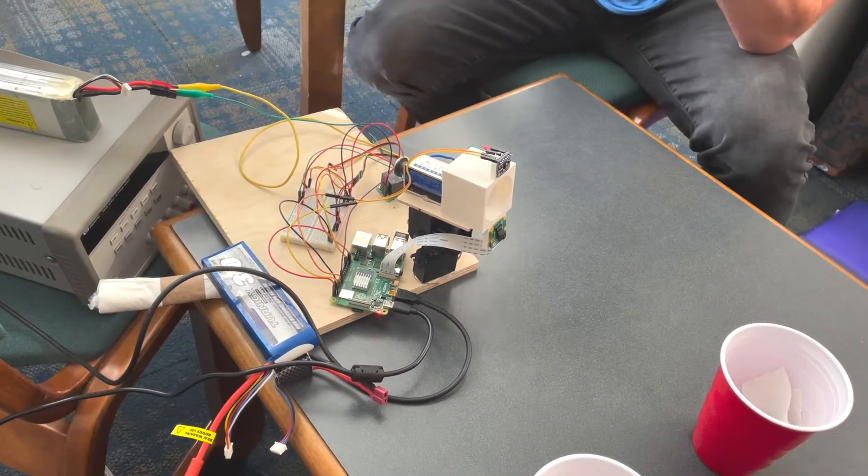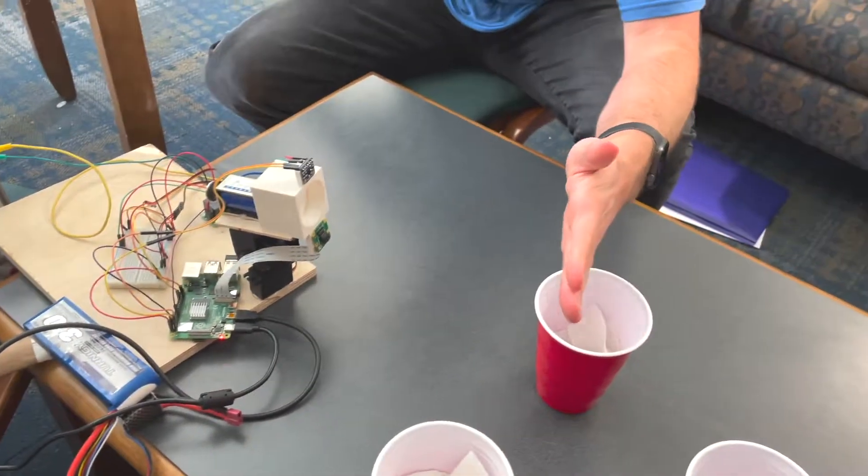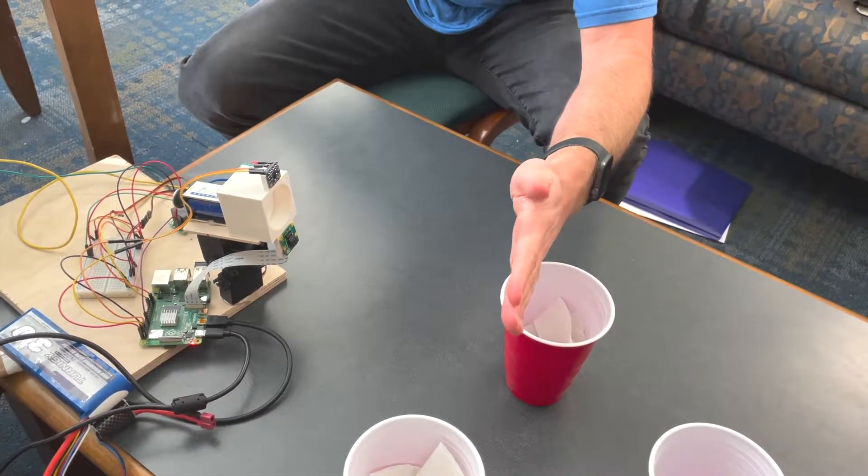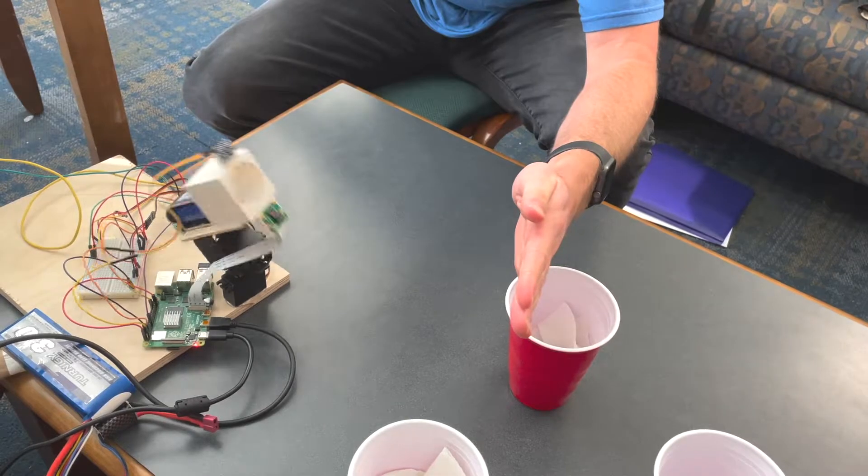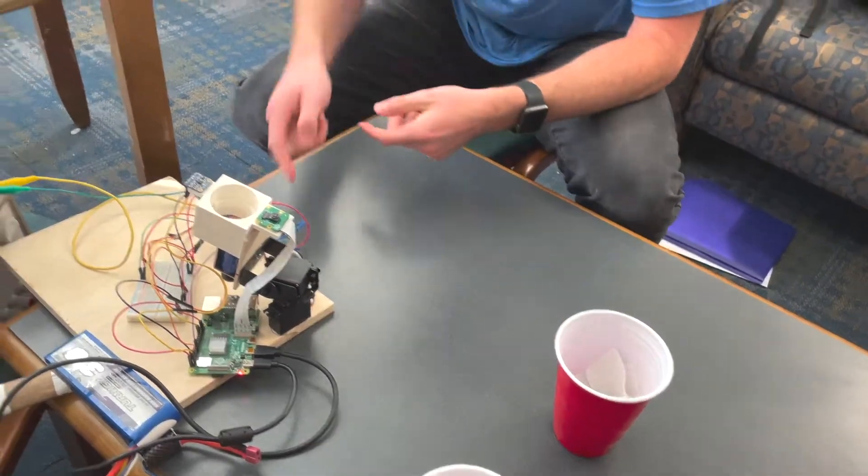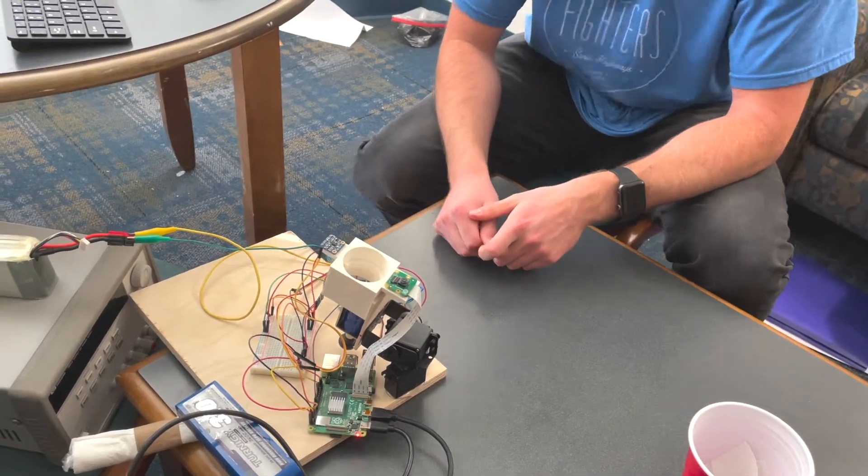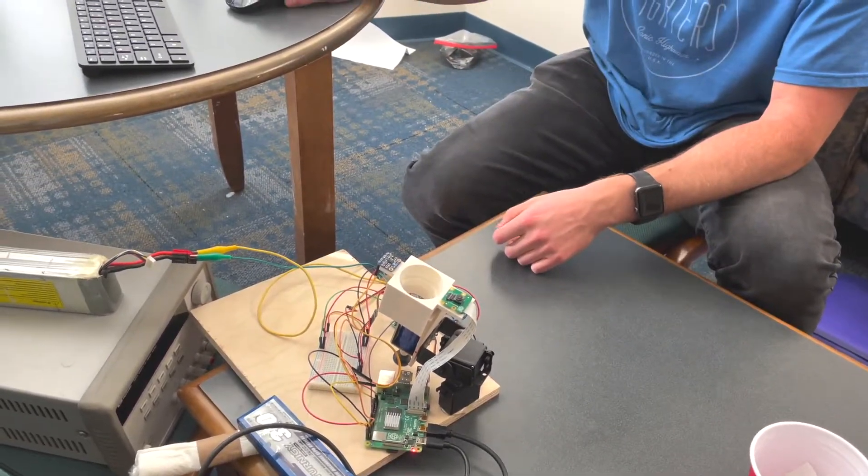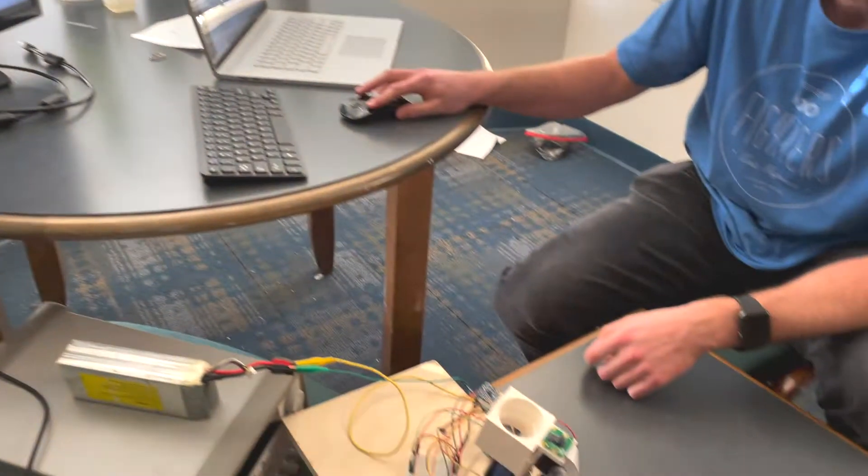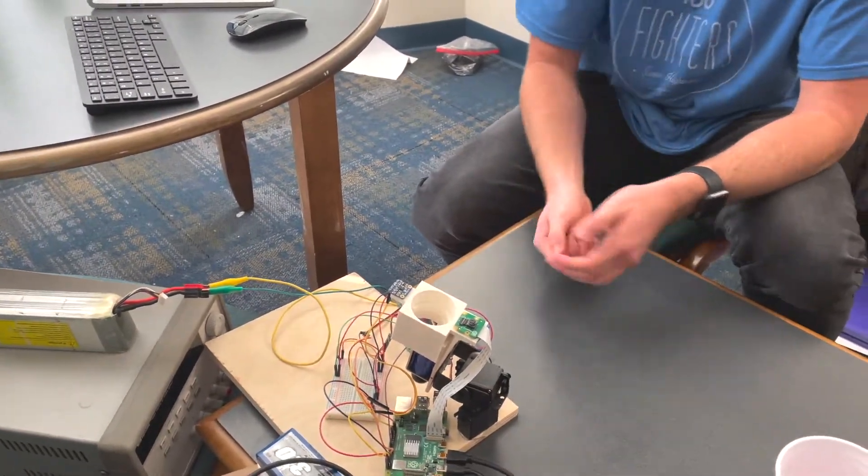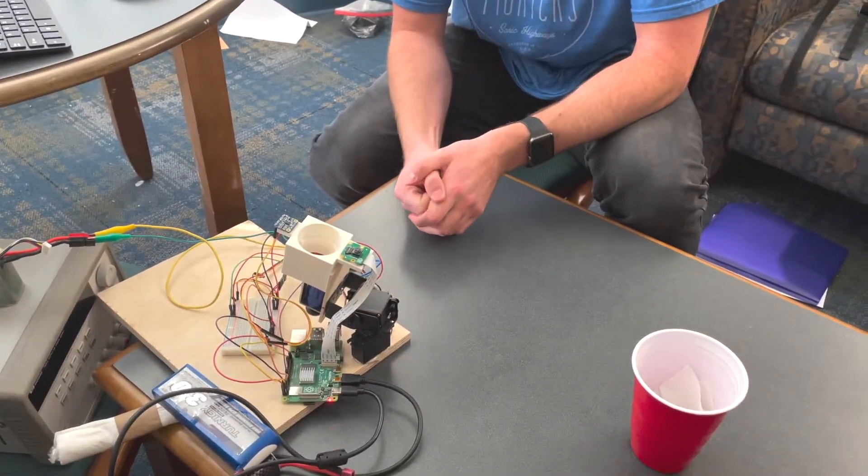Now if I want to aim at this cup I just make sure I have my hand in the right spot. I click aim. It's going to take a second to take some measurements and we can fire the ping pong ball from here which is currently not loaded. If we click fire the solenoid will click forward shooting what would be a ping pong ball if it was there. And that's how it works.